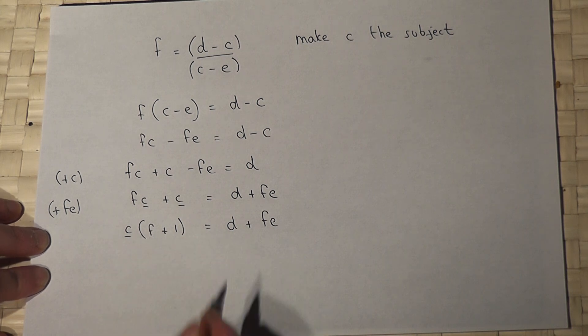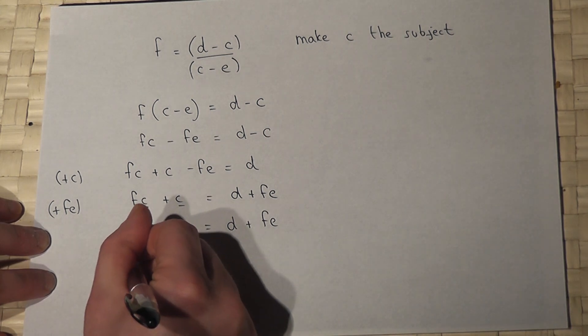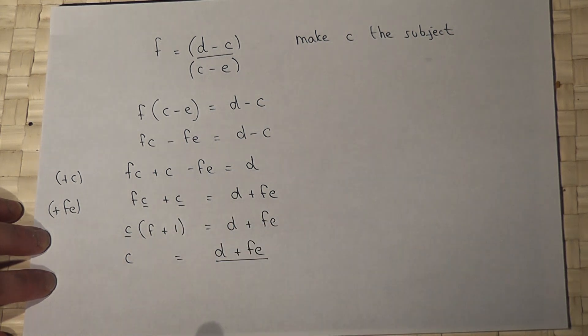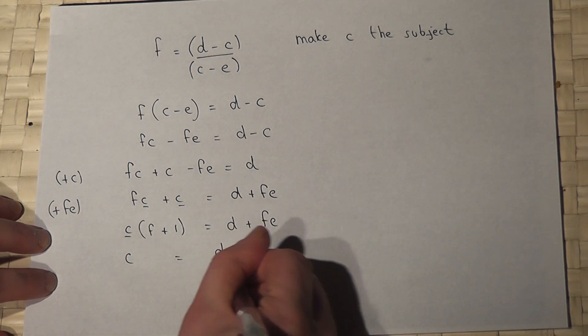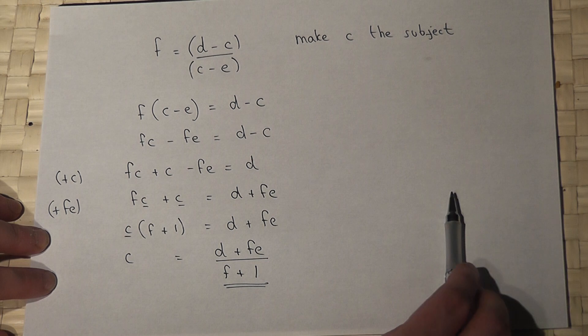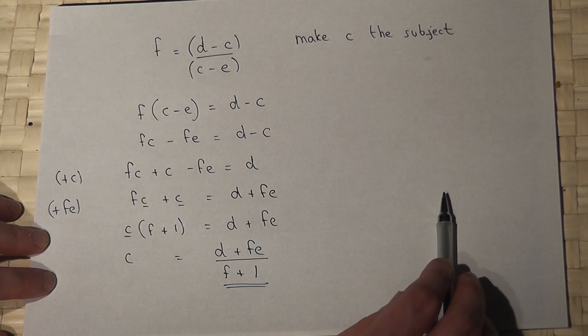I then divide by the factor, so C just equals D plus FE all over F plus 1. So there we go, we have made C the subject.